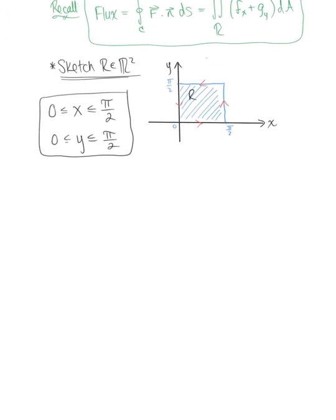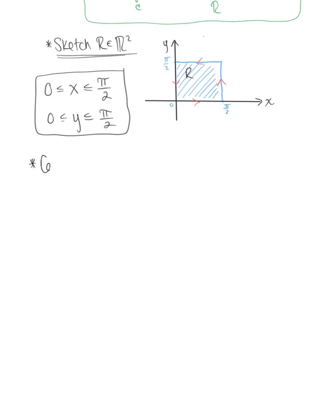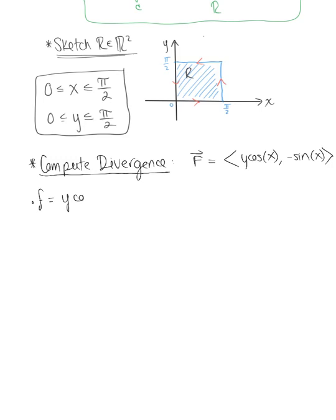Now that we have our region here, we want to go ahead and compute the divergence to set up that integral. Here we are given, since it's not up on the screen anymore, let's keep in mind that we were given the vector field F defined by components y cos(x), -sin(x) in R². So f is the x component, y times cos(x), and g is -sin(x).